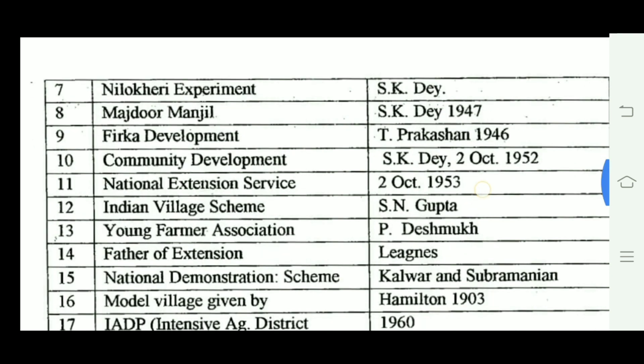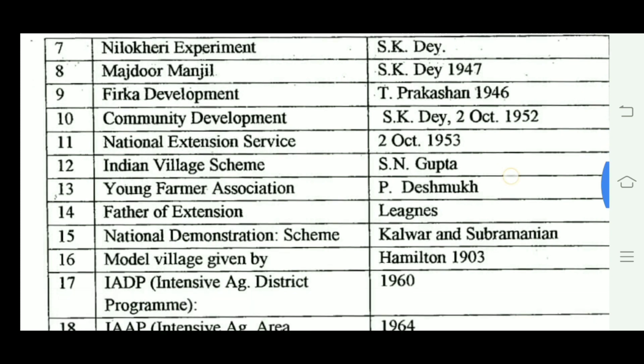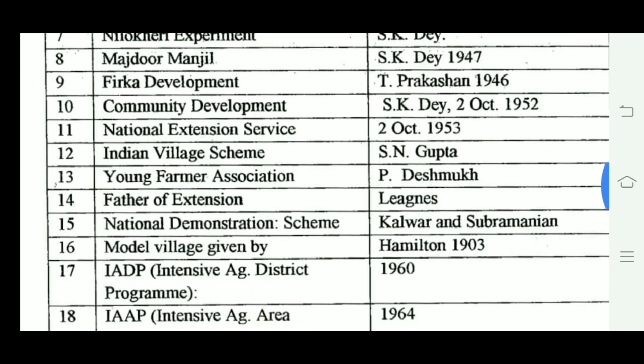The Indian Village Scheme was associated with S.N. Gupta's strategy. Young Farmer Association was linked to P. Deshmukh, Father of Extension. The National Demonstration Scheme was associated with Kalvaran Subramanian. The Model Village concept was given by Daniel Hamilton.